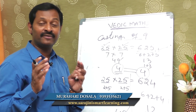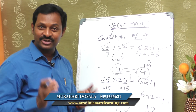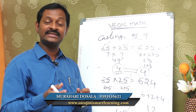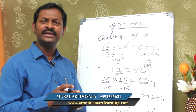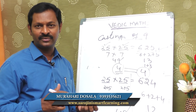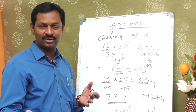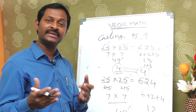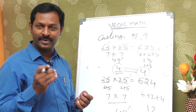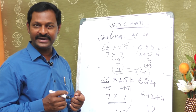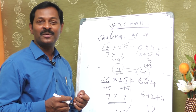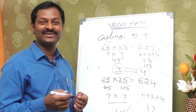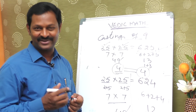We have to check additions, multiplications, and subtractions using casting of 9. If you have a question with 4 options and need to know what is correct or wrong, use the casting of 9 method. Hope you understood this concept. We will check further in the next episodes. Thank you.